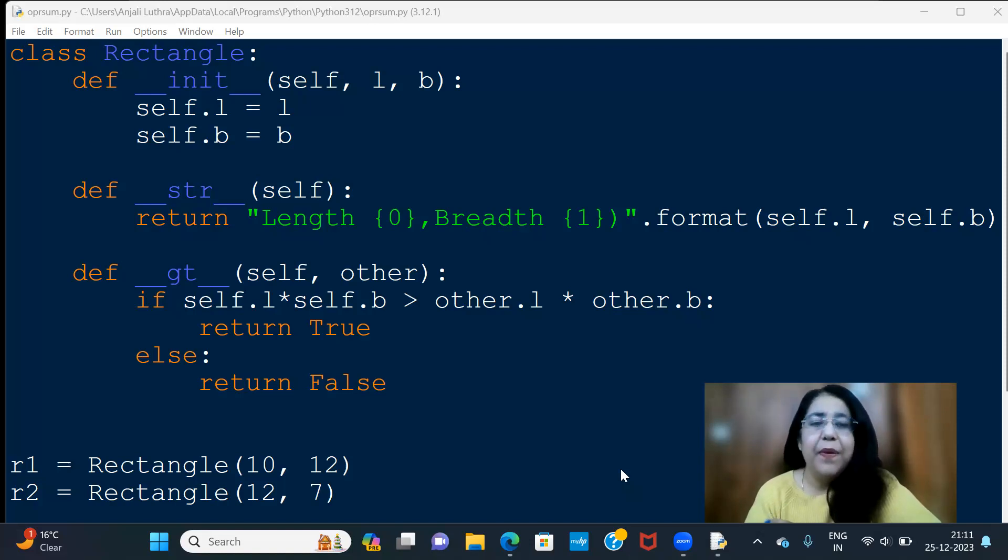So we are taking example here of a rectangle class. I want to know that I have multiple rectangles and I will check which rectangle is big area-wise. So I have a rectangle class here, in the constructor L and B are taken, the length and breadth.